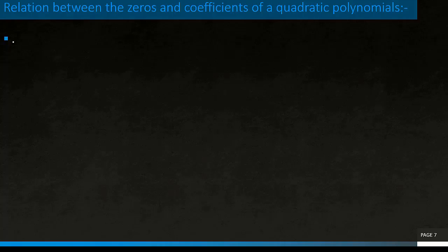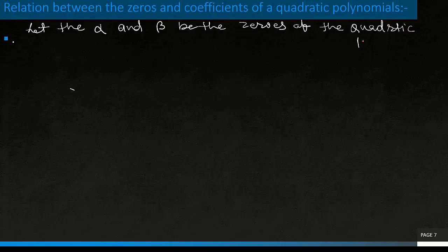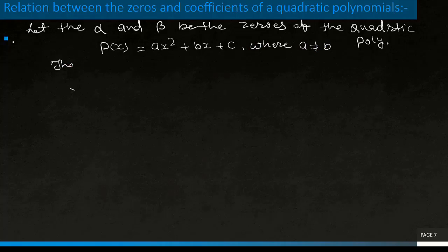We know that a quadratic polynomial has two zeros. So here alpha and beta are zeros of the quadratic polynomial. Let alpha and beta be the zeros of the quadratic polynomial, so p(x) is equal to ax² plus bx plus c, where a does not equal zero. Then (x minus alpha) and (x minus beta) will be factors of p(x).